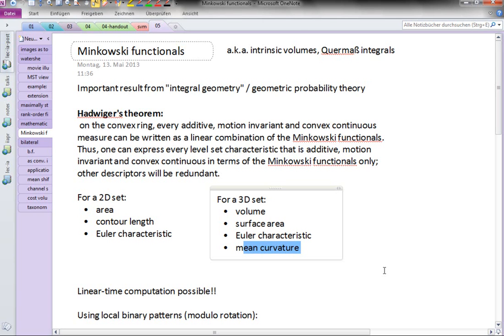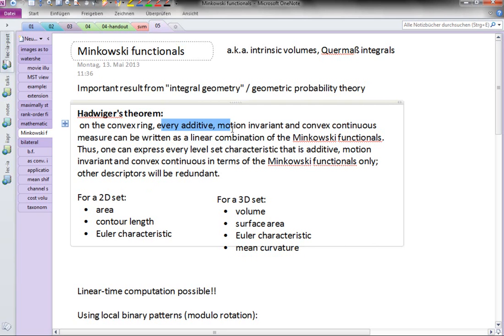This is the good news: Hadwiger's theorem says that every additive, motion invariant, and convex continuous measure can be written as just a weighted sum of these few characteristics. The bad news is that not every interesting characteristic that you may want to extract is additive, motion invariant, and convex continuous.